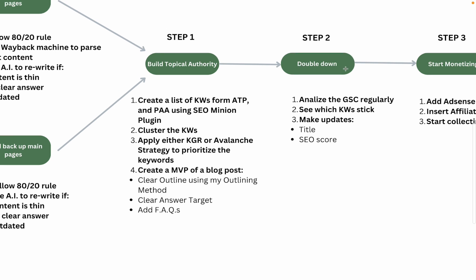Then I analyze Google Search Console regularly — I call this step two: the double down. You see which keywords and URLs stick. Once impressions for a certain URL start coming in but you're not on the first page, you can update the content. I usually do two things: make sure the title is click-worthy (you can use ChatGPT or Jasper for that), and improve the SEO score using Neuron Writer or Surfer SEO. I don't over-optimize content at the early stage, but I do it here once I see traction.